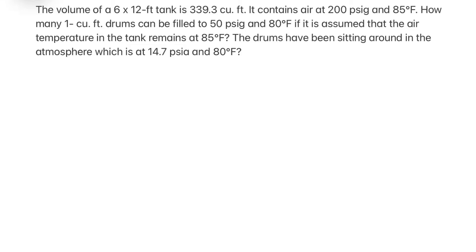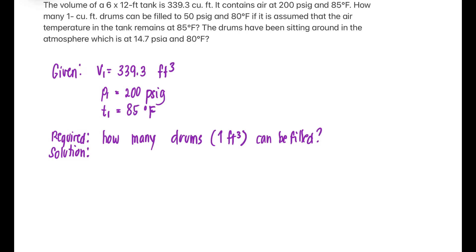The volume of a 6 by 12 feet tank is 339 cubic feet. It contains air at 200 psi gauge and 85 degrees Fahrenheit. How many one-cubic-feet drums can be filled to 50 psi gauge and 80 degrees Fahrenheit, if it is assumed that the air temperature in the tank remains at 85 degrees Fahrenheit? The drums have been seated around in the atmosphere, which is at 14.7 psi and 80 degrees Fahrenheit.